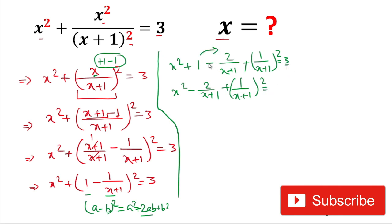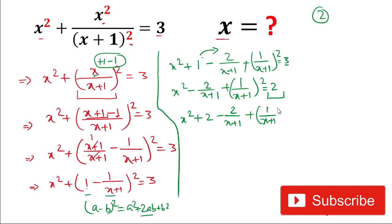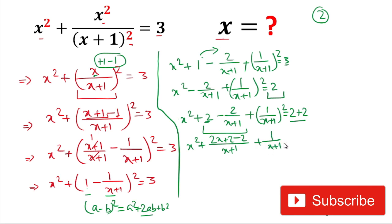We take the 1 to the right-hand side, so 3−1 = 2. The right-hand side is 2, which is not a perfect square. To make a perfect square, we add 2 to both sides, making the right-hand side 4. So we have x² + 2 − 2/(x+1) + 1/(x+1)² = 4. Taking LCM (x+1), the terms −2 and +2 cancel, giving x² + 2x/(x+1) + 1/(x+1)² = 4.